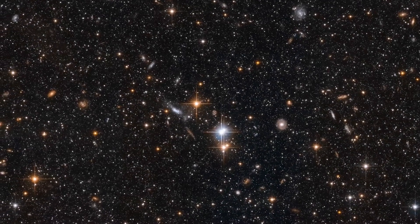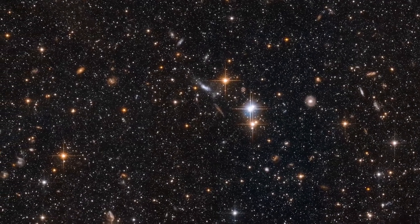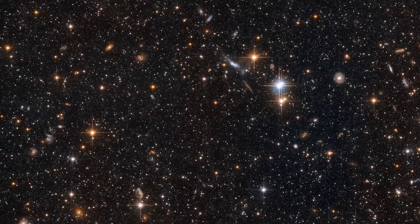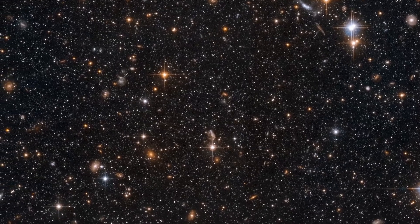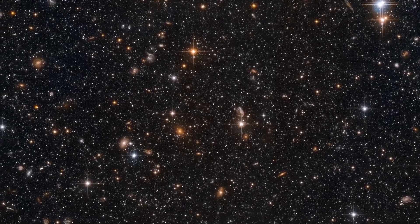Busy as these images look, we're only in the outskirts of the Andromeda galaxy here. That's because these observations were made in order to study a particular type of variable star that is common in the outer reaches of galaxies.